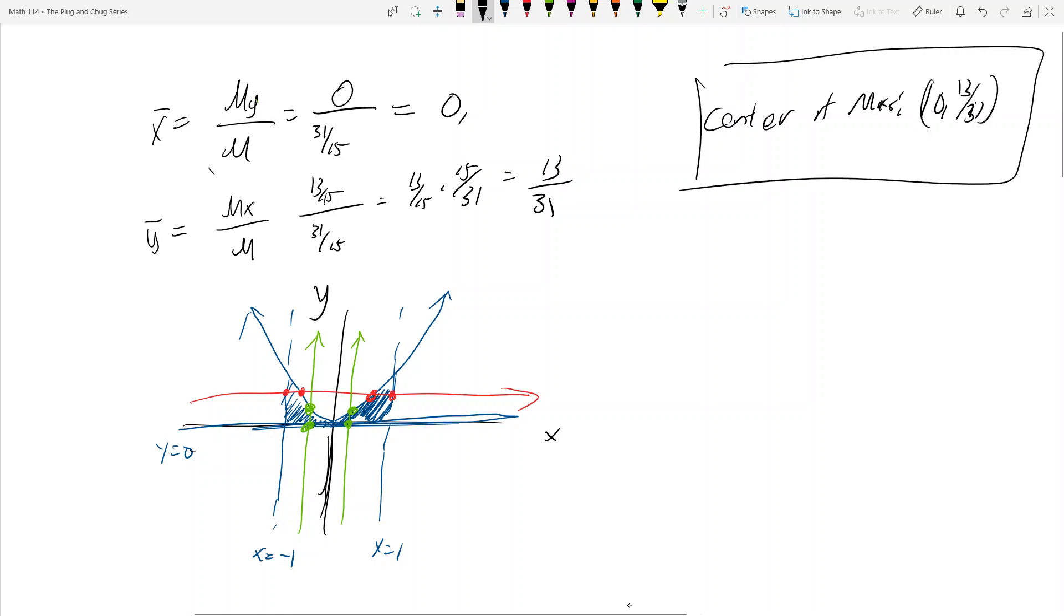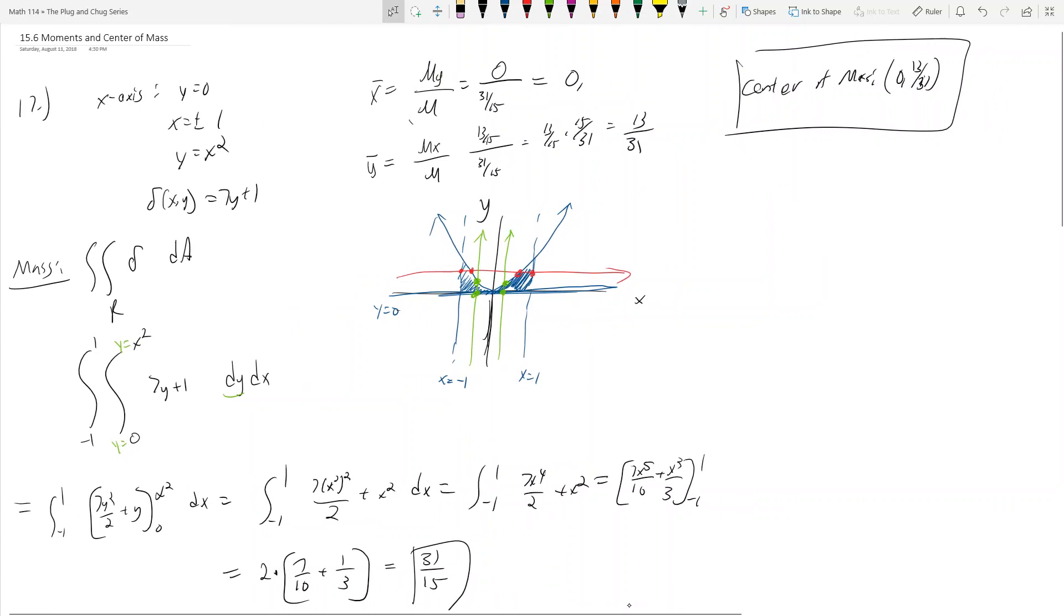So Mx is equal to 13 over 15. I can't even get the names of these guys straight because they're just so counterintuitive. So have these guys on your formula sheet and again, copy them down correctly. Copy them down off of the formula sheet onto your exam or your homework correctly. So Mx is equal to 13 over 15. That's really 13 15ths times 15 over 31, so times reciprocal, and you'll see the y coordinate is 13 over 31. So the center of mass is going to be 0 comma 13 over 31.